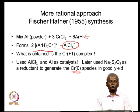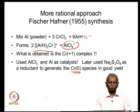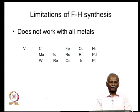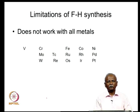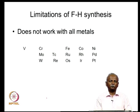Aluminum trichloride was used as a catalyst and also serves as a suitable way to form a large anion. Very often the larger the anion, the better it is when you have a very large cation, to stabilize the crystal structure. This is how the first Fischer-Hafner synthesis was carried out, and there are some serious limitations for this synthesis.